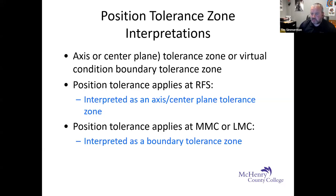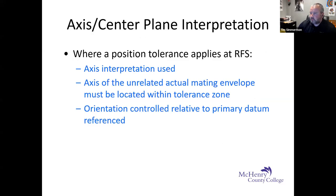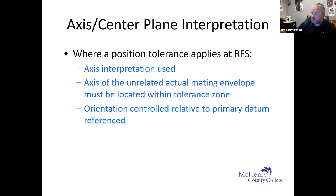We're going to run through some examples tonight, so it's going to make it a lot more real. Where position tolerance applies regardless of feature size, we can use an axis. The axis of the unrelated actual mating envelope must be located within the tolerance zone, with orientation controlled relative to the primary datum reference.